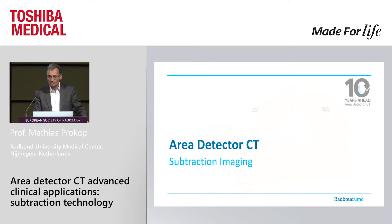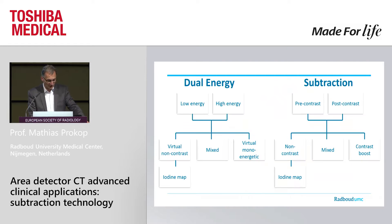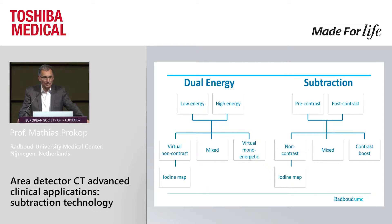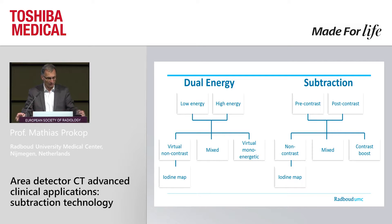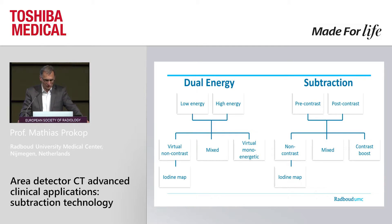What I'm going to talk about is subtraction imaging, and it's actually a technique that is, in principle, not so much different from dual energy when it comes to the outcomes. You have a low and high energy image in dual energy — you can do a virtual non-contrast, an iodine map, mix them up, or create virtual monoenergetic images. You can do very much the same in subtraction.